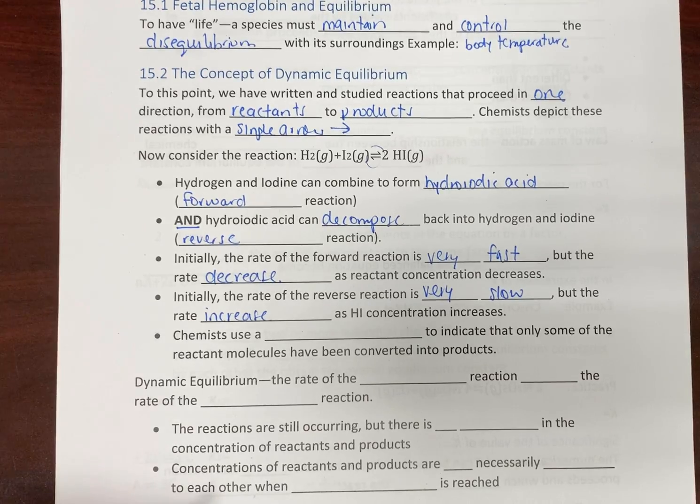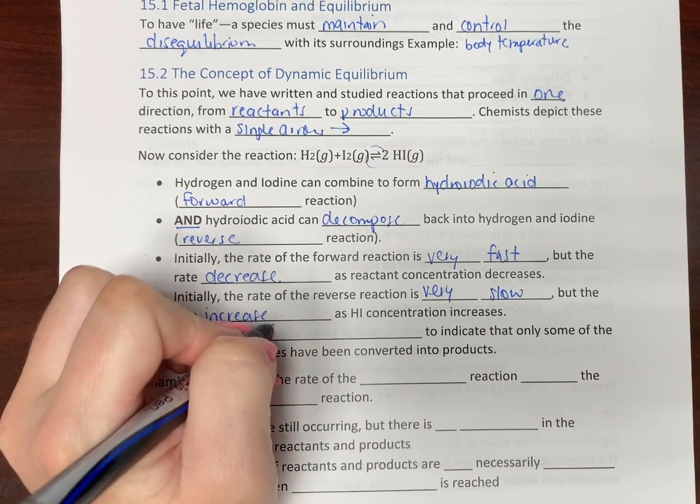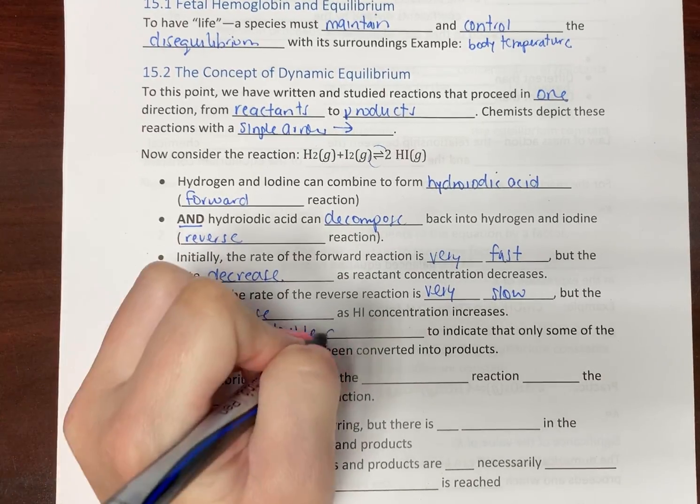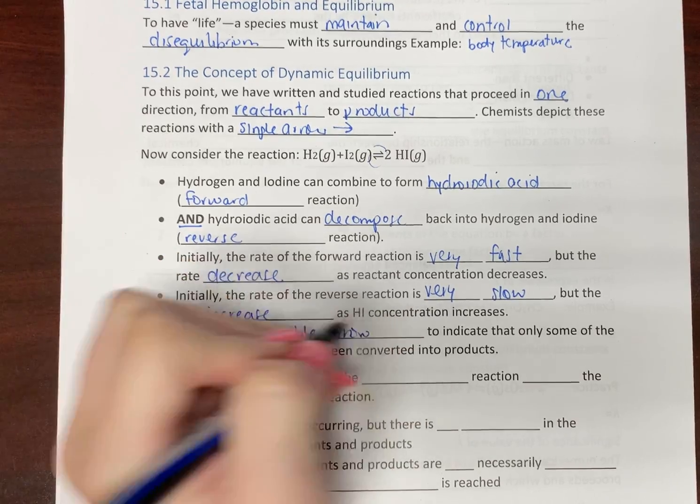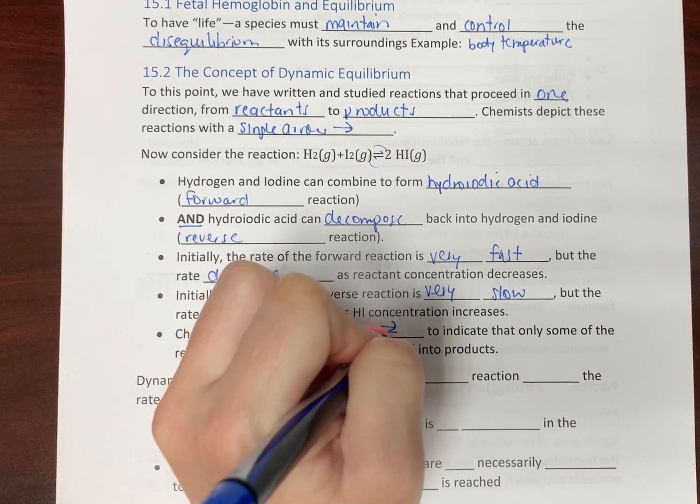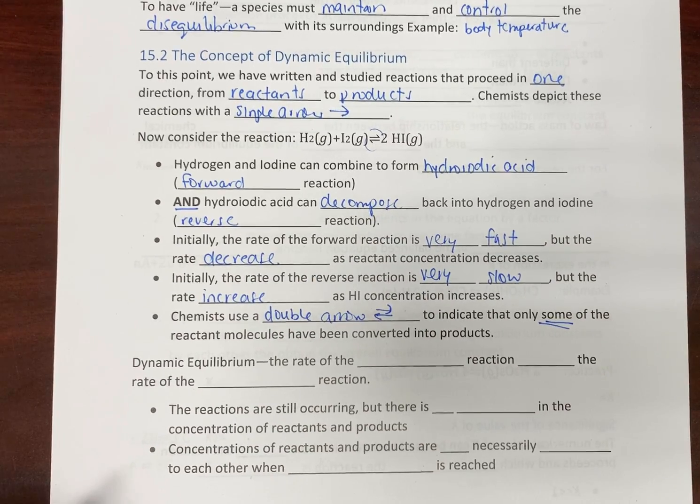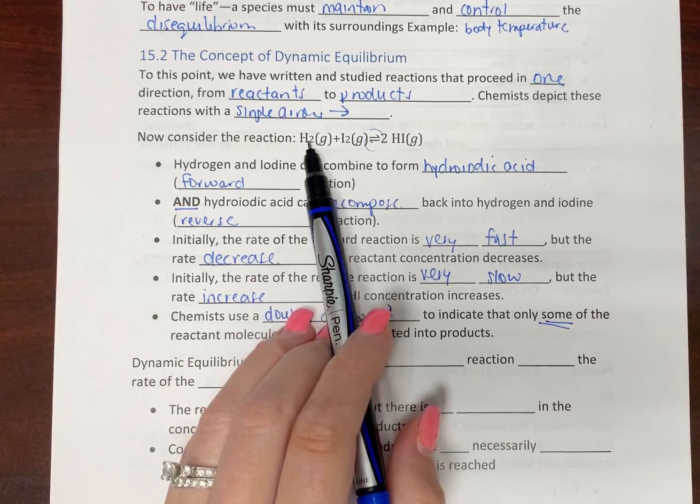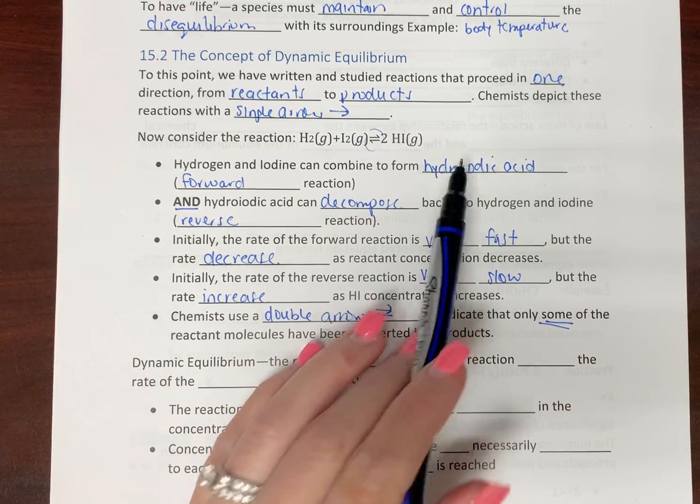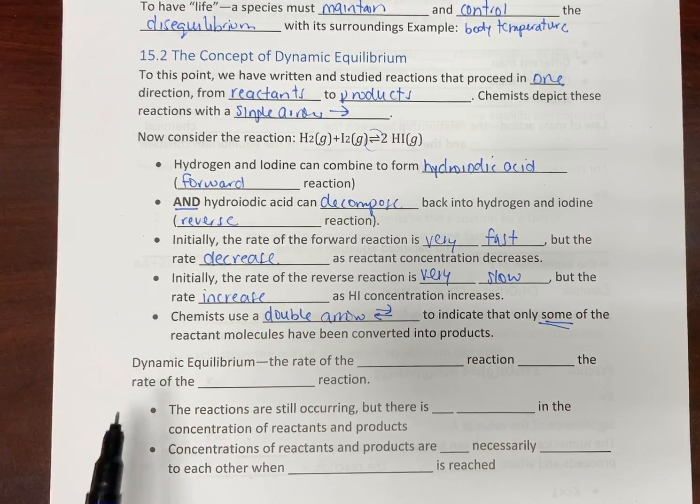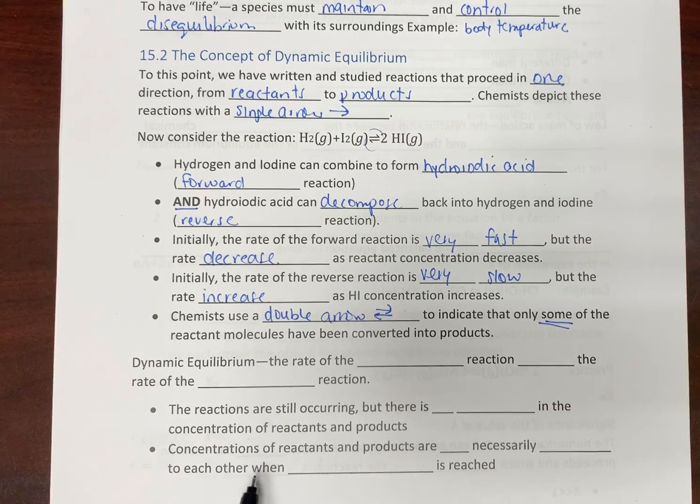We're going to use the double arrow to indicate that only some of the reactant molecules are converted into products. This is a reaction that does not go all the way to what we would consider completion. All the reactants do not make products; only some of them do.